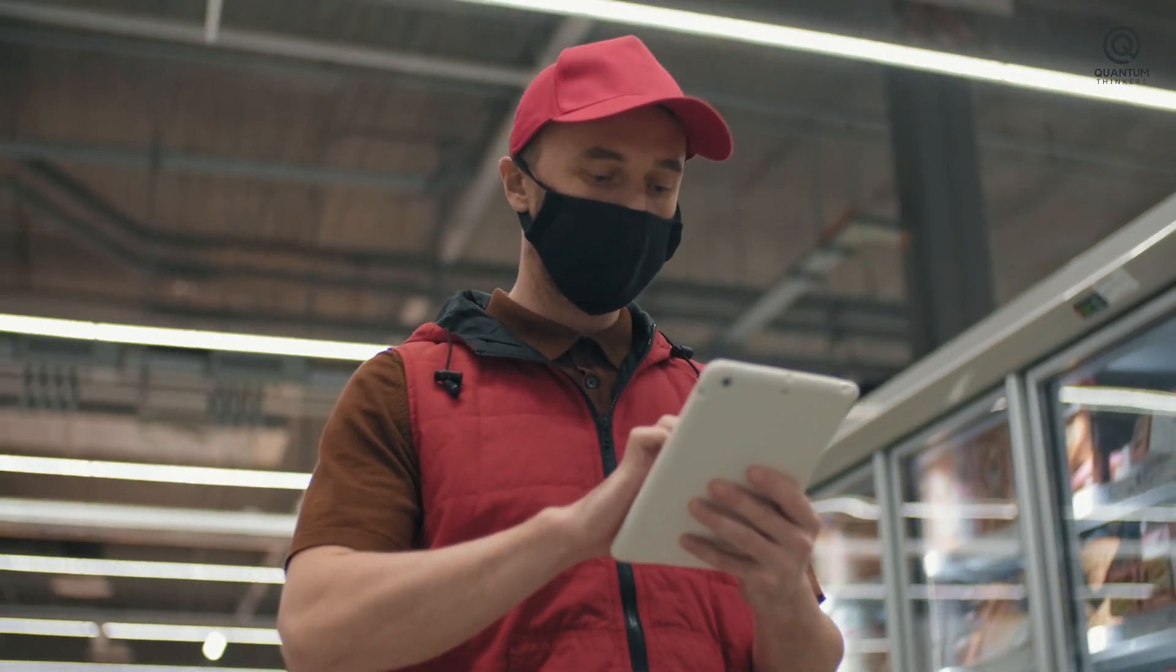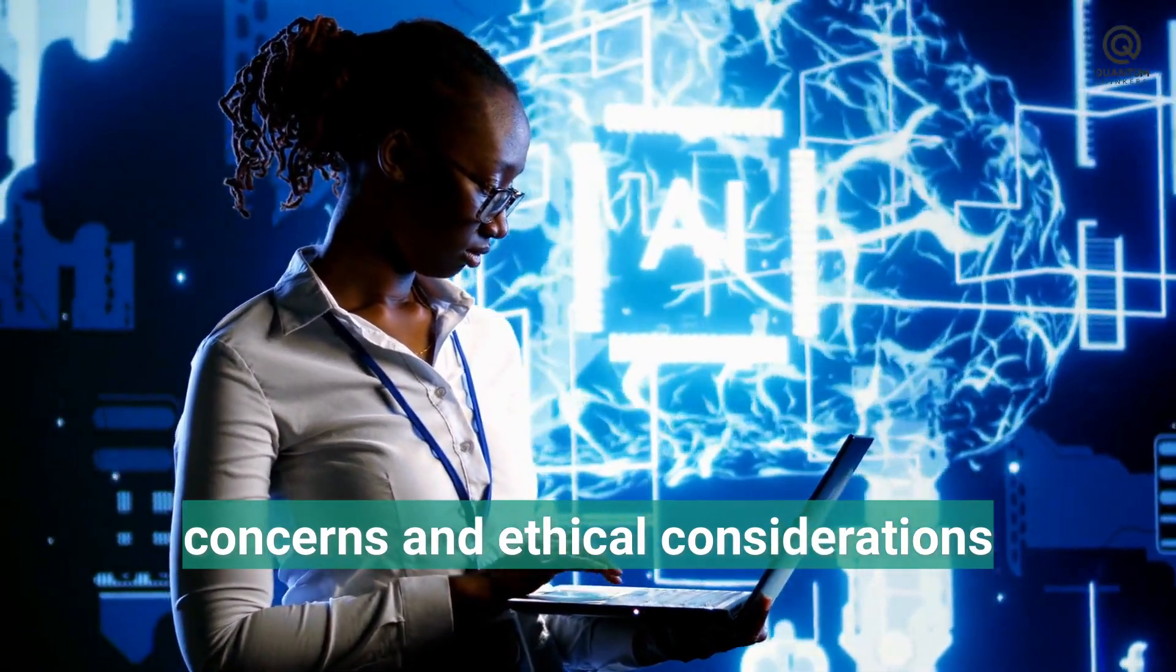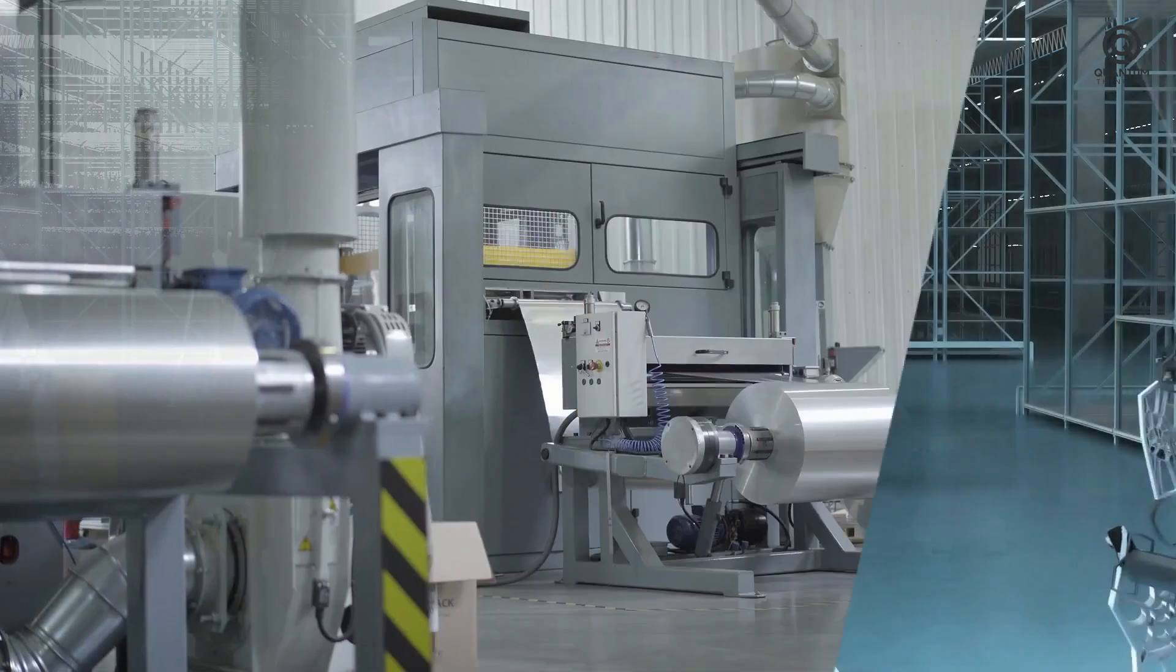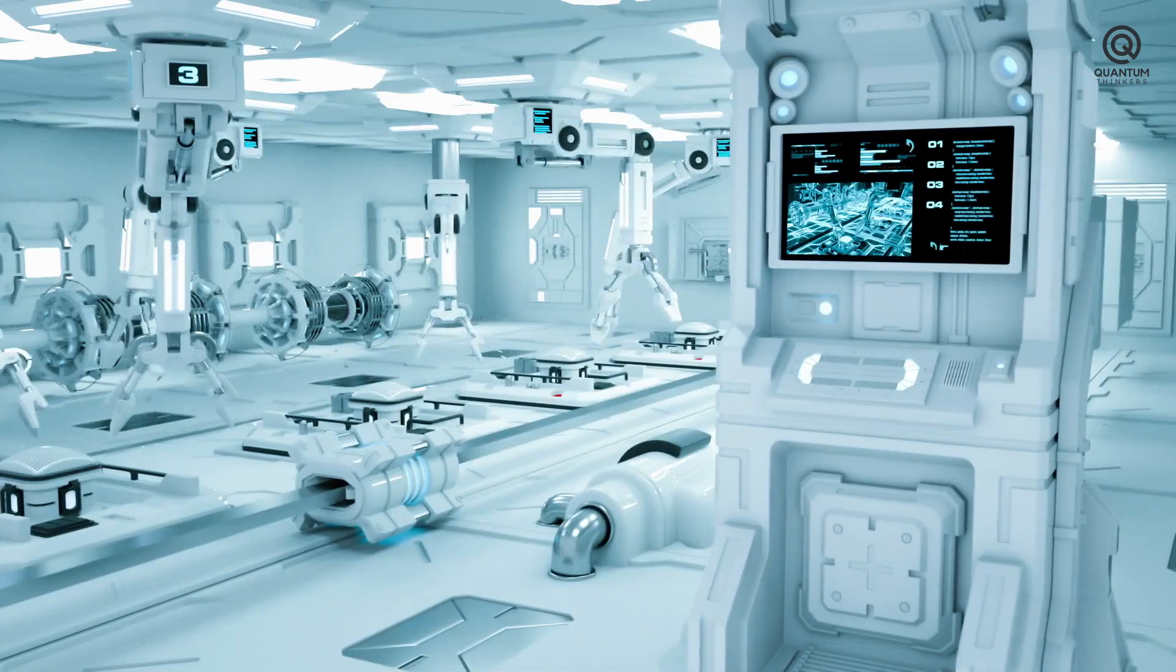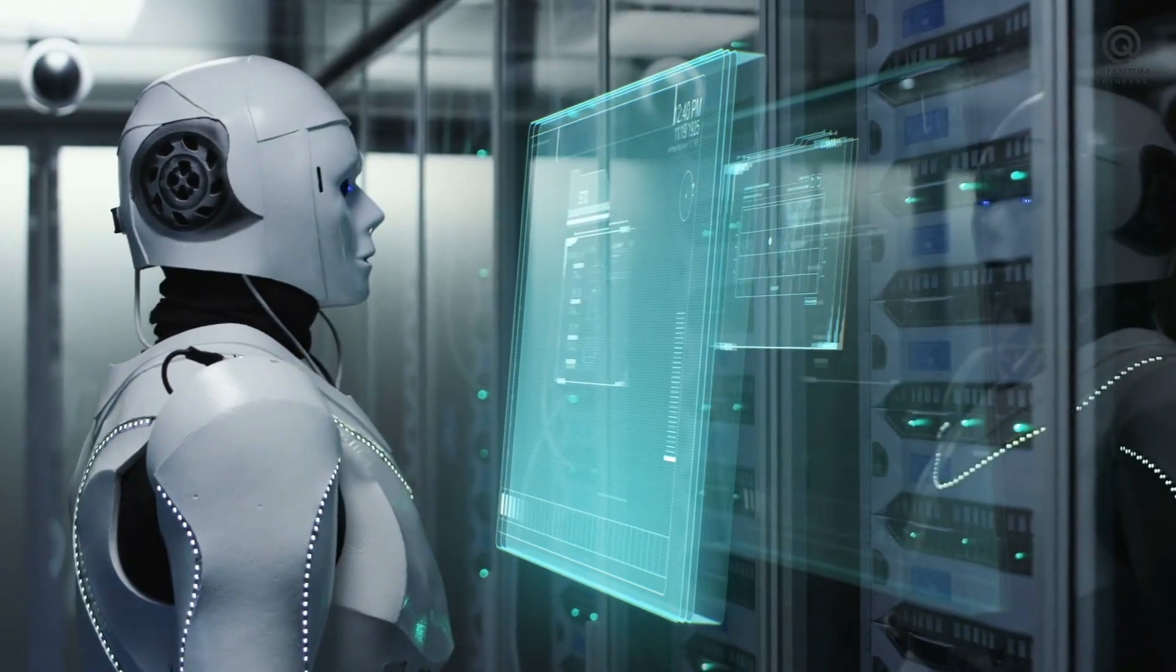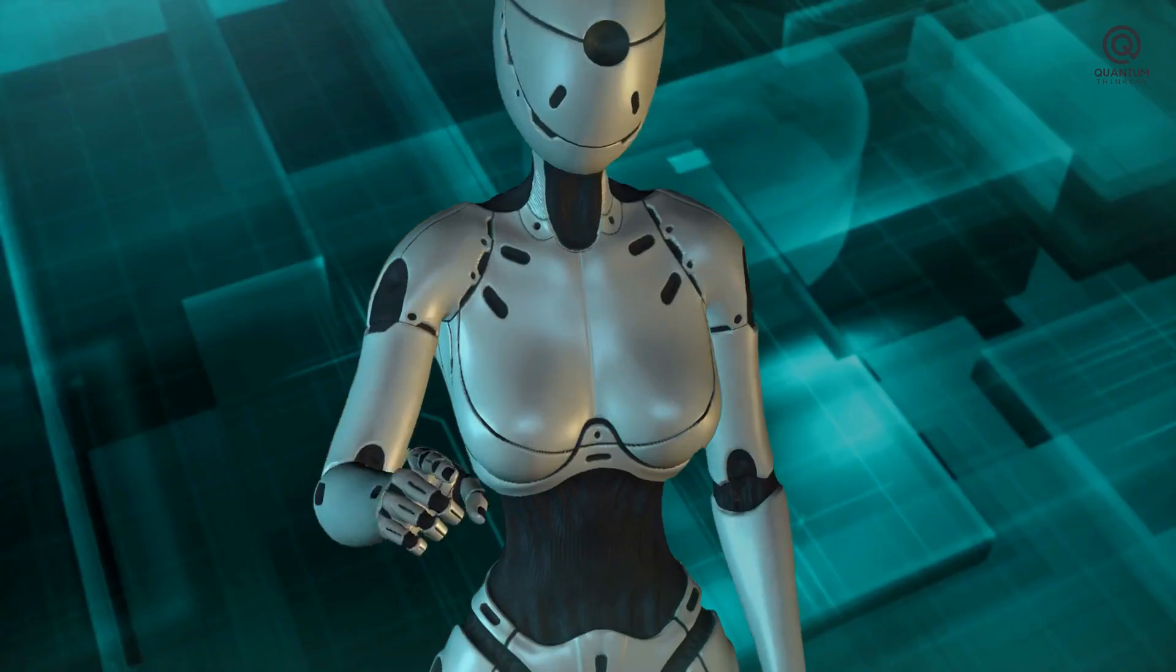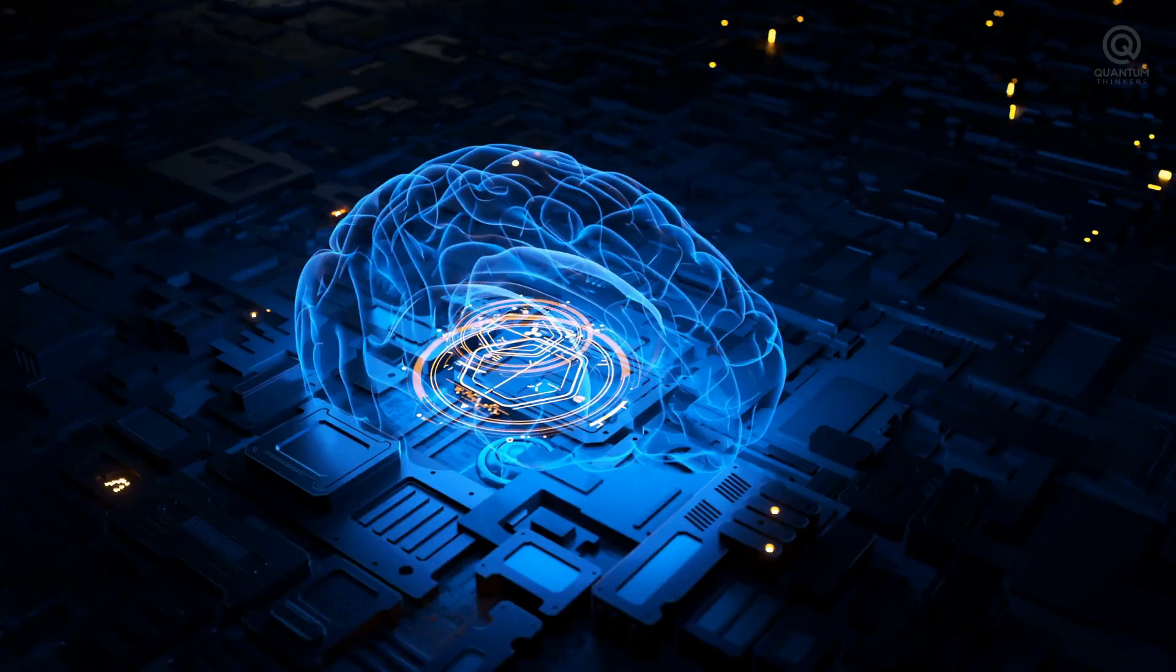While AI brings immense promise, it also raises important concerns and ethical considerations. Firstly, there's the risk of job displacement due to automation. As AI systems become more proficient, certain jobs may be replaced by machines, potentially leading to unemployment and a need for workforce retraining. Secondly, ethical implications arise, particularly concerning the rights of robots and AI's potential for superior intelligence. Questions emerge about whether advanced AI systems should have legal rights or be subject to regulations.